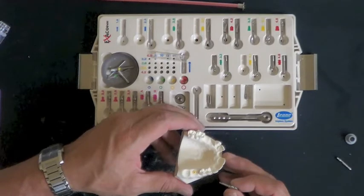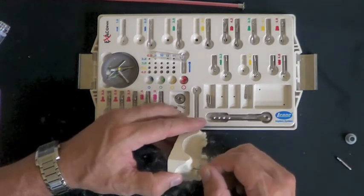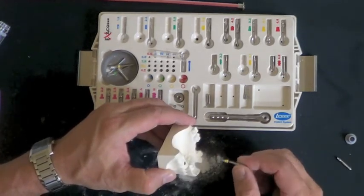When you do the second stage surgery, then, you simply remove that cover cap by inserting the same tool. Turn it a couple times clockwise to engage it and pull it out of the implant itself.